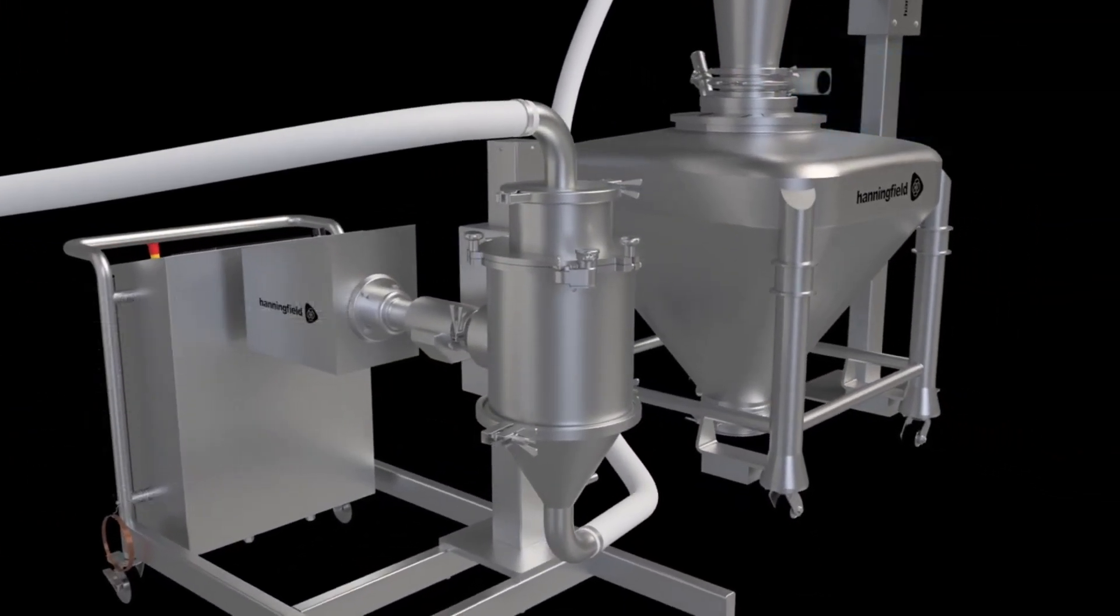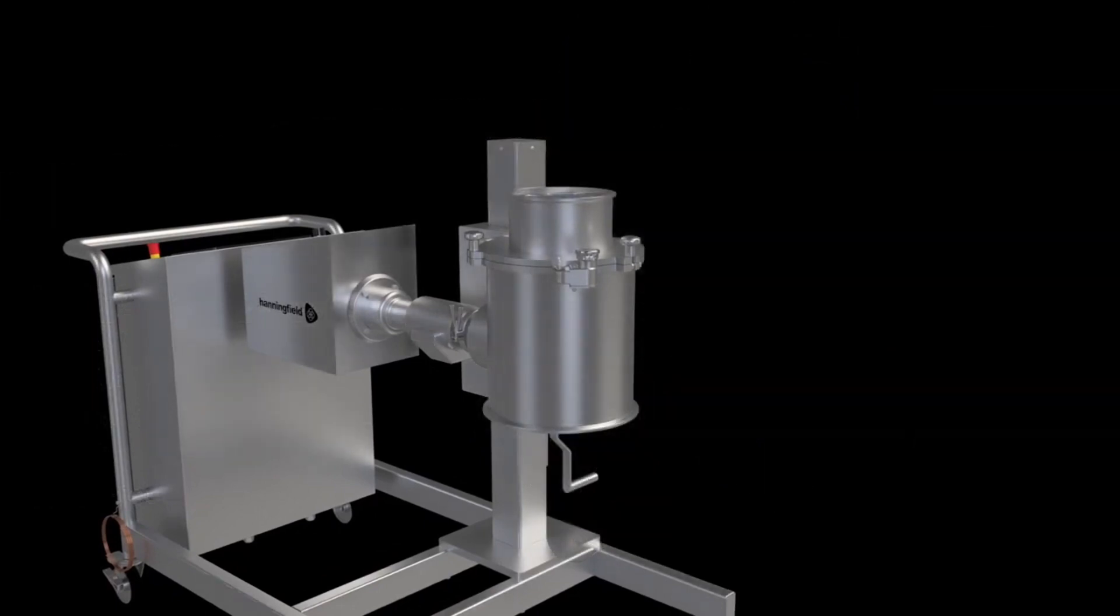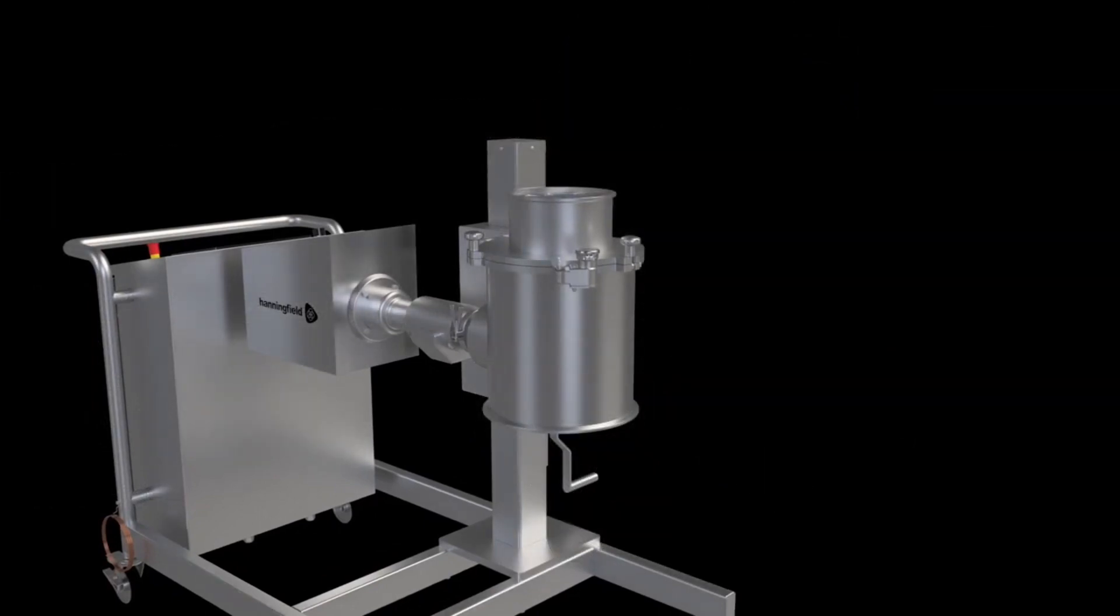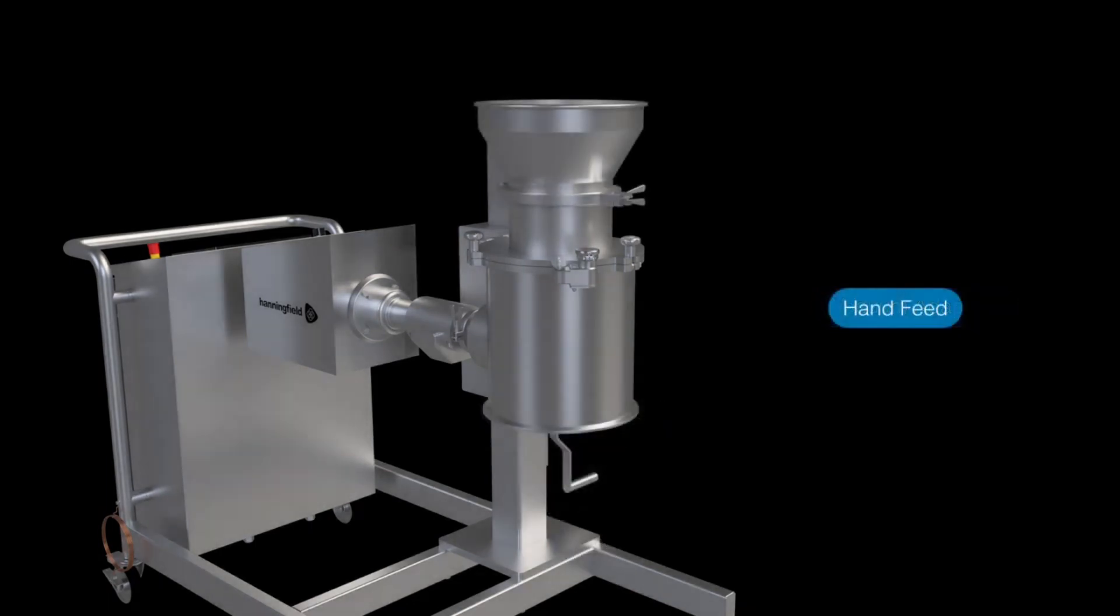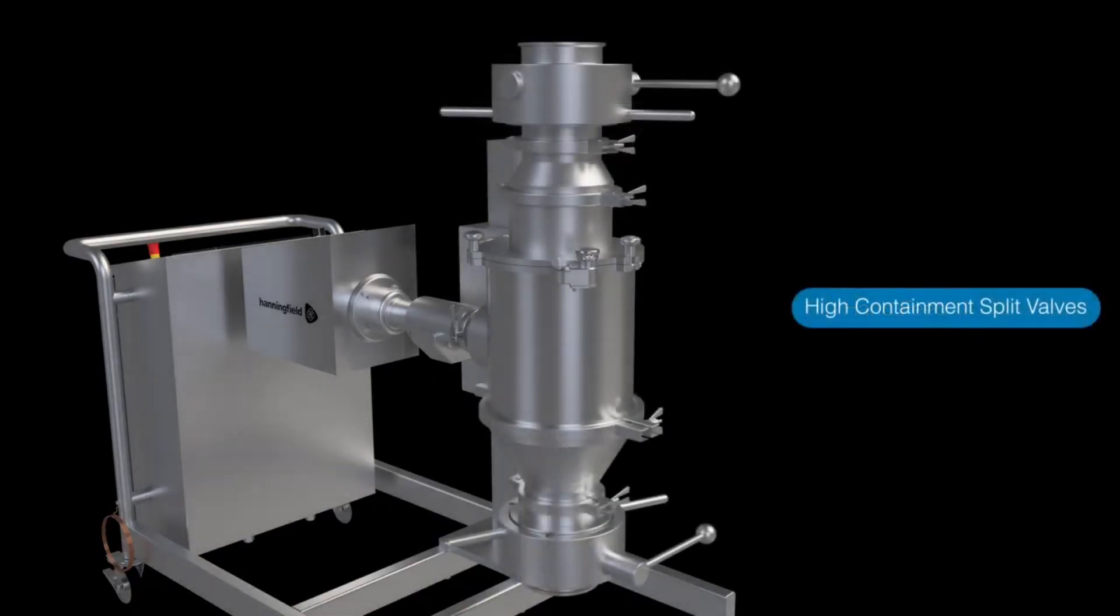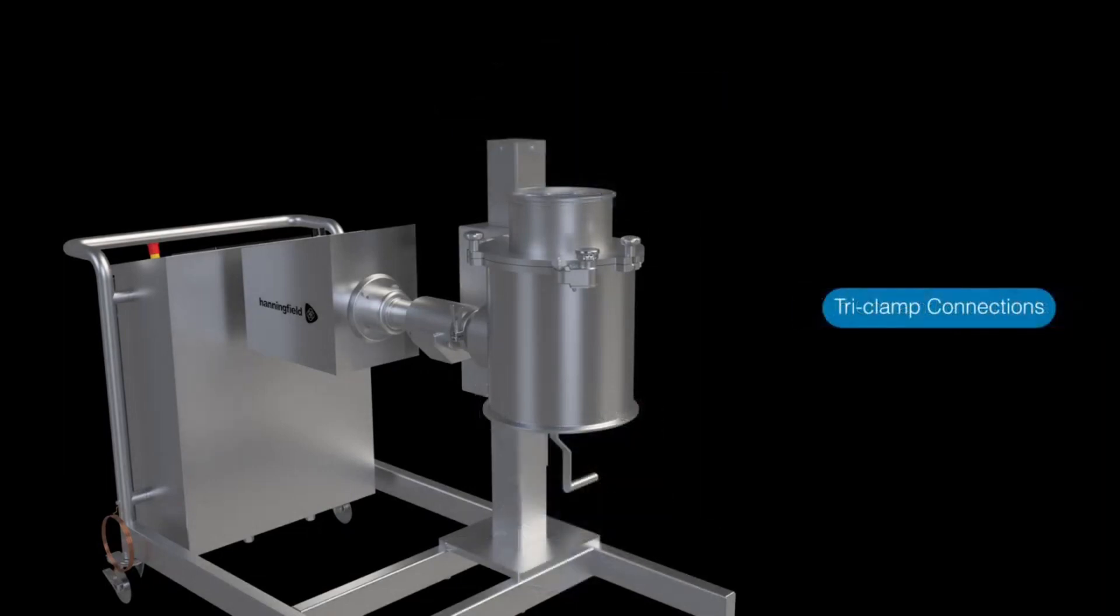The Unimill can be highly customized to meet your demanding process requirements with various frame mount options such as swing arm or portable trolley. The mill can also be supplied with various feed and discharge configurations, including vacuum adapters, hand feed, high containment split valves, and tri-clamp connections for connecting almost anything. The unit can also be made suitable for use in explosion-proof environments up to ATEX zone 20.